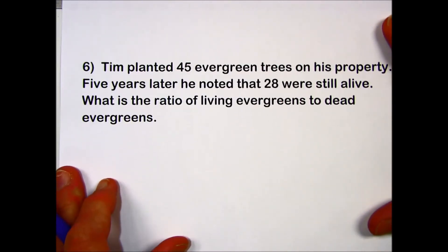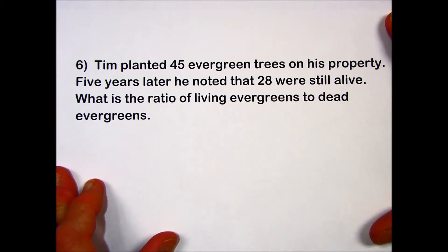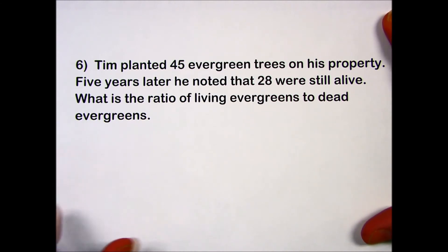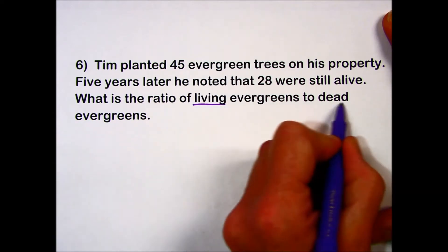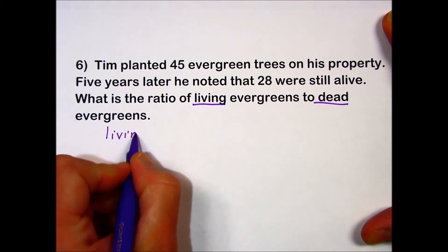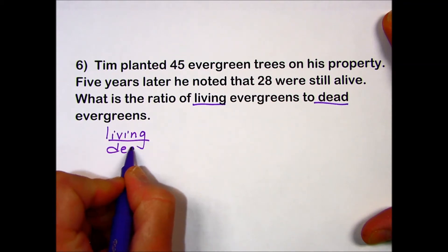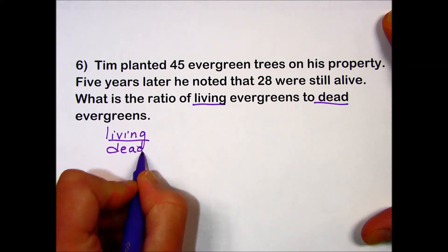In problem number six, it states that Tim planted 45 evergreen trees on his property. Five years later he noted that 28 were still alive. What is the ratio of living evergreens to dead? So we're looking at a ratio of living to dead for these plants. We'll make note of that in terms of the specifics of the problem.